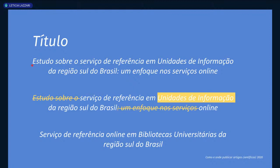'Unidades de informação' é um conceito abrangente que contém vários tipos de bibliotecas: universitária, escolar, municipal, pública, etc. O objetivo do título é ser direto, para que a pessoa leia e saiba do que você está falando. Se a pesquisa é sobre bibliotecas universitárias, por que não colocar isso no título? O título melhorado ficaria: 'Serviço de referência online em bibliotecas universitárias da região sul do Brasil' — claro, direto e objetivo.